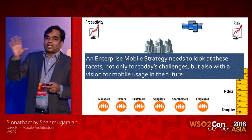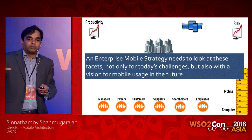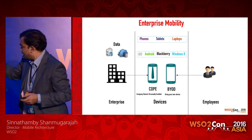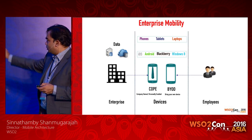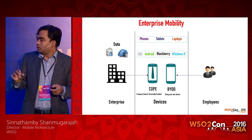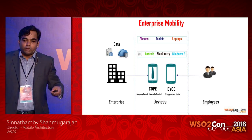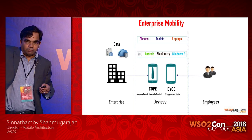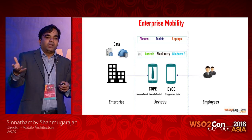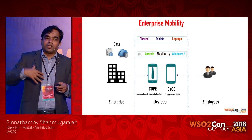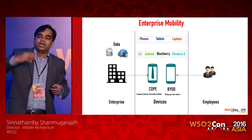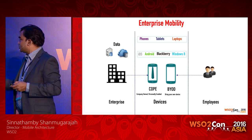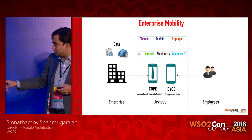Let's see what challenges we are facing now in enterprise mobility. I've separated them into enterprise, devices, and employees. The enterprise has local data on-premise and some data in the cloud — for example, email via Gmail. The devices are mostly iOS, Android, BlackBerry, and Windows. If the enterprise gives devices to employees, we call it COPE — Company Owned, Personally Enabled. If the employee brings their own device to use at work, we call it BYOD — Bring Your Own Device. There are also other terms like CYOD — Choose Your Own Device.